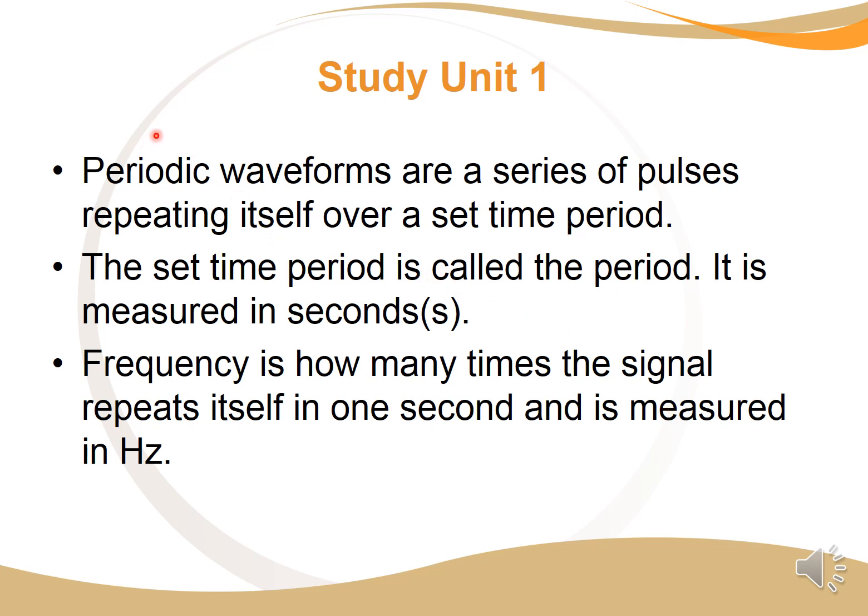Connected to this study unit, we also talk about periodic waveforms or pulse trains, sometimes called, and it's just a series of pulses repeating itself over a set time period. The set time period is called the period, and it is measured in seconds. The period is how long does it take for one repetition of this wave to complete. Frequency is how many times a signal repeats itself in one second, and it is measured in hertz. Very important, frequency measured in hertz, and period measured in seconds.